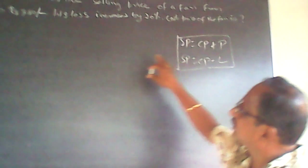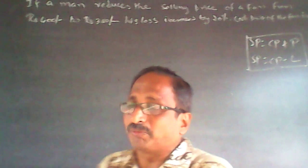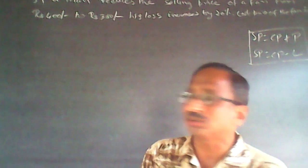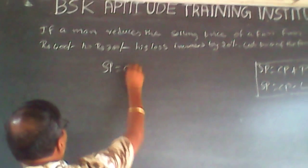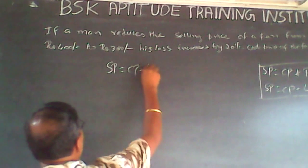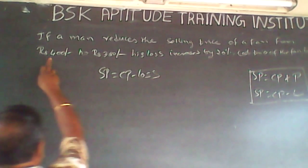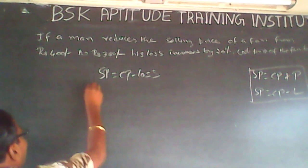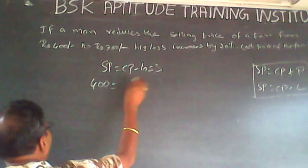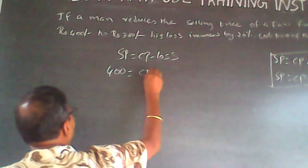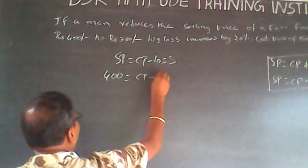When he sells the article at Rs 400, he is incurring some loss. So as per the formula, selling price equals cost price minus loss: 400 = CP minus loss. When selling at 400, some loss is incurred which is unknown, so it is CP minus loss.